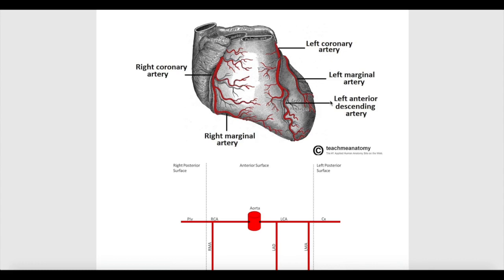First of all, we have two main arteries that supply the heart: the right coronary artery and the left coronary artery. I'm going to start talking about the right coronary artery. Remember, this is an overview. Both of these arteries arise from the aorta, or from the first part of the aorta, which is the ascending aorta.